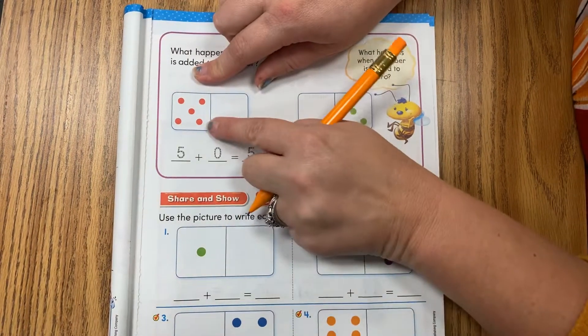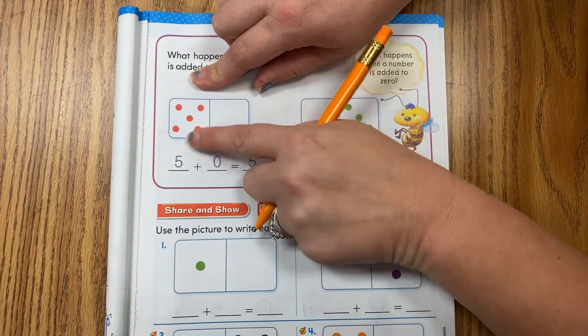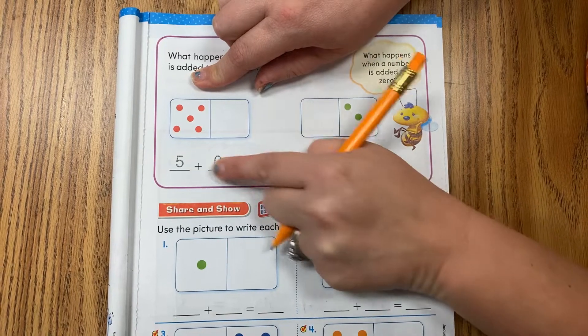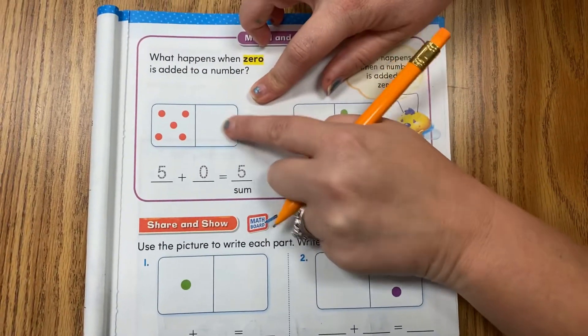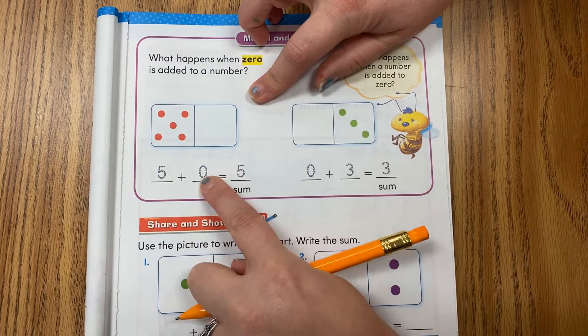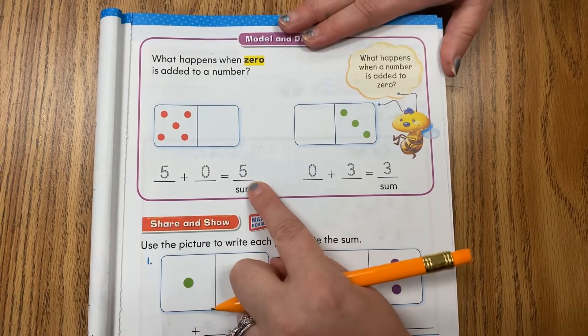So if we look here, they had one, two, three, four, five. And they added the five down here. And we're using addition still, so plus. And this side had zero, so there was zero. So five plus zero is the same as five.